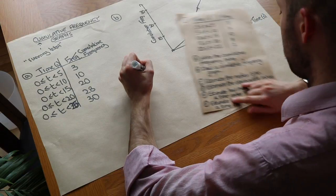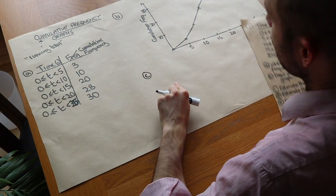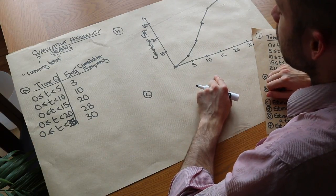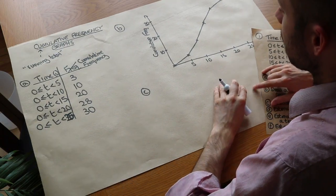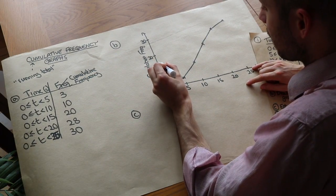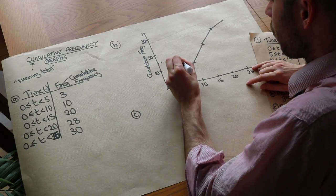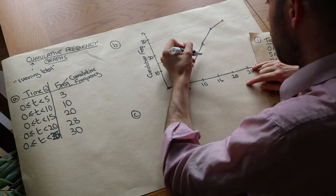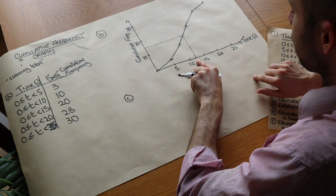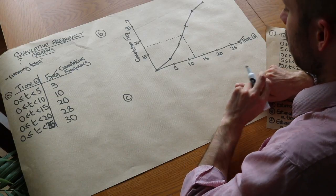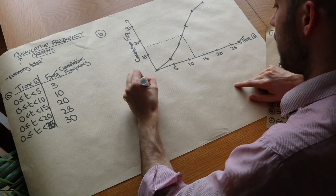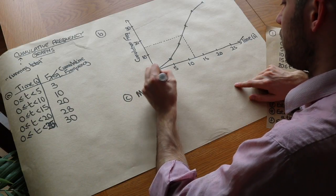Now we want to estimate the median time. We've got thirty people, so to find the median we use the middle person — the 15th. We go across to the 15th person on the cumulative frequency axis, across to the graph, and then down. We can see it's roughly a time of twelve seconds. So the median we're estimating is twelve seconds.